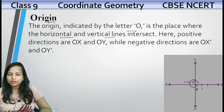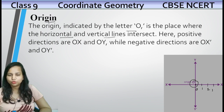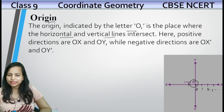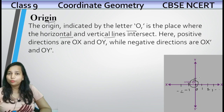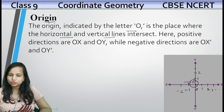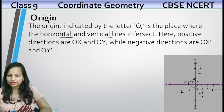Iske right side mein, main one unit distance lekar chal rahi hoon: one, two, three — is tarhan se points hain. Aur iske left side mein kya honge — negative numbers honge: minus one, minus two. Similarly, yeh y-axis hai — upar wali side plus points honge: one, two, three and so on. Aur niche kya honge: minus one, minus two, minus three, like this.